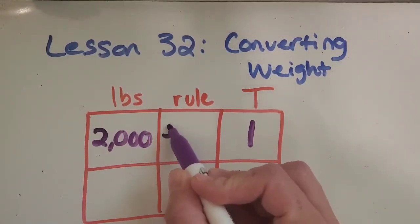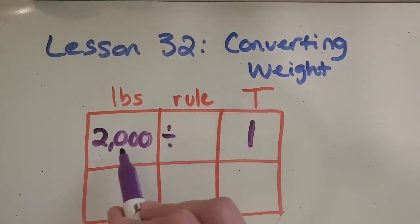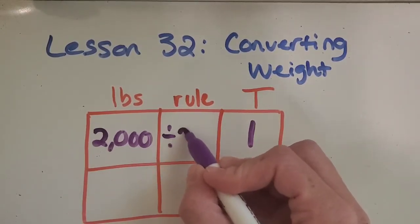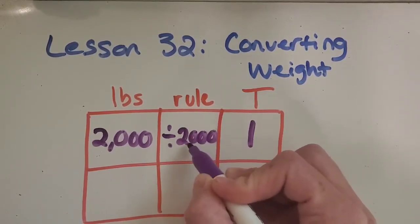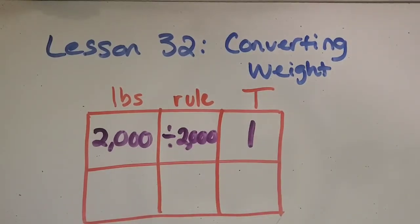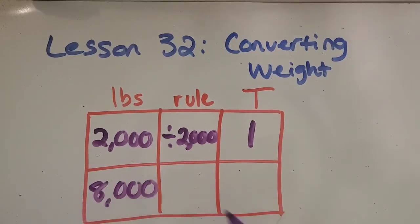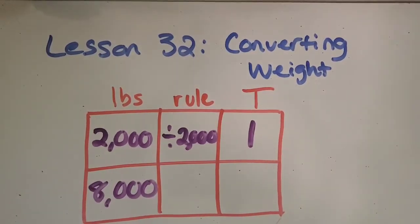Okay great, it's definitely division and we do 2,000 divided by 2,000 and it gets us one. And then we got the information that an average elephant would be 8,000 pounds. So I want you to pause the video and see if you can figure out how many tons that is.